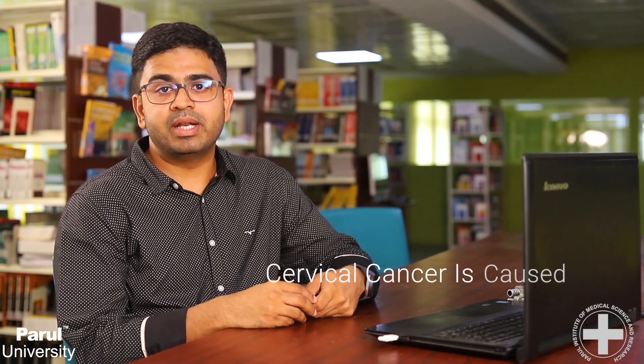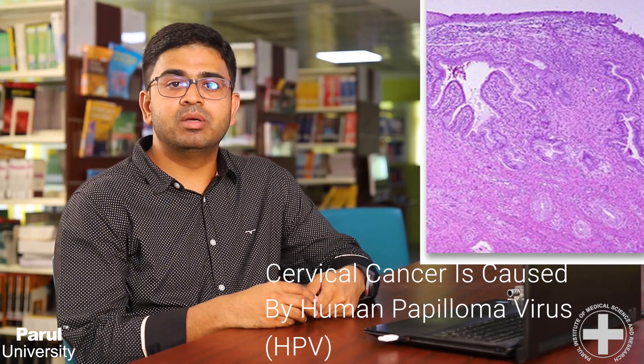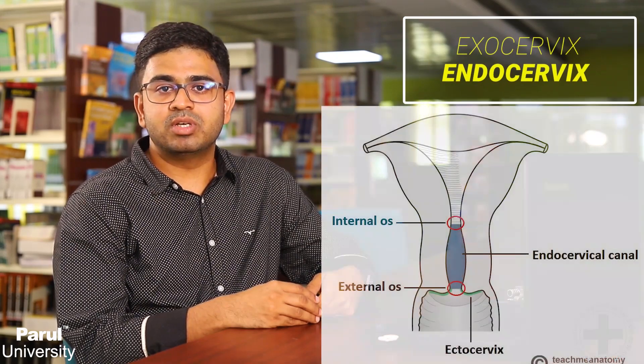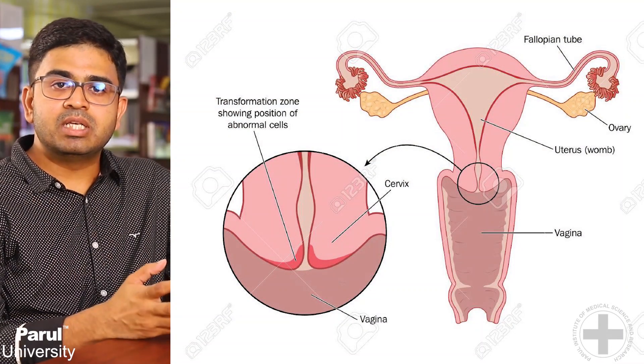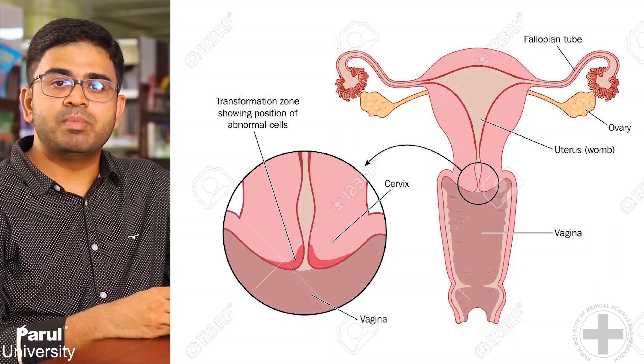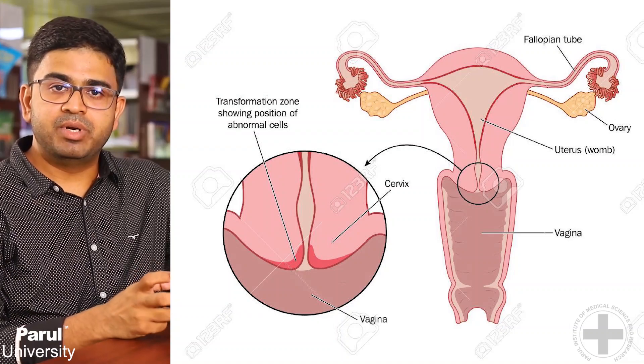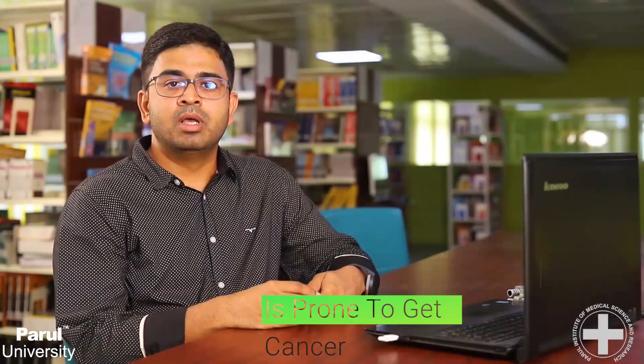Before we go to what diagnostic modalities are there, we'll first see how this cancer is caused. Cervical cancer is typical in that it is now known to be caused by a virus called the human papillomavirus. It has various strains, and the most common ones which cause cancer are HPV-16 and HPV-18. The cervix itself is divided into two parts: the exocervix and the endocervix, and in between is what we call the transformation zone. This transformation zone is basically metaplasia, and this particular area is prone to get cancer. This area is infected by HPV-16 and HPV-18 and then undergoes transformation to squamous cell carcinoma.